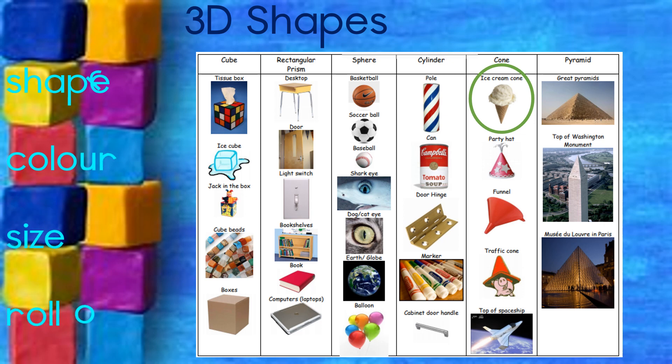If we look at the ice cream cone, the shape is cone shaped. The colour is a light brown sandy colour. The size is bigger than a party hat, about the size of my hand.